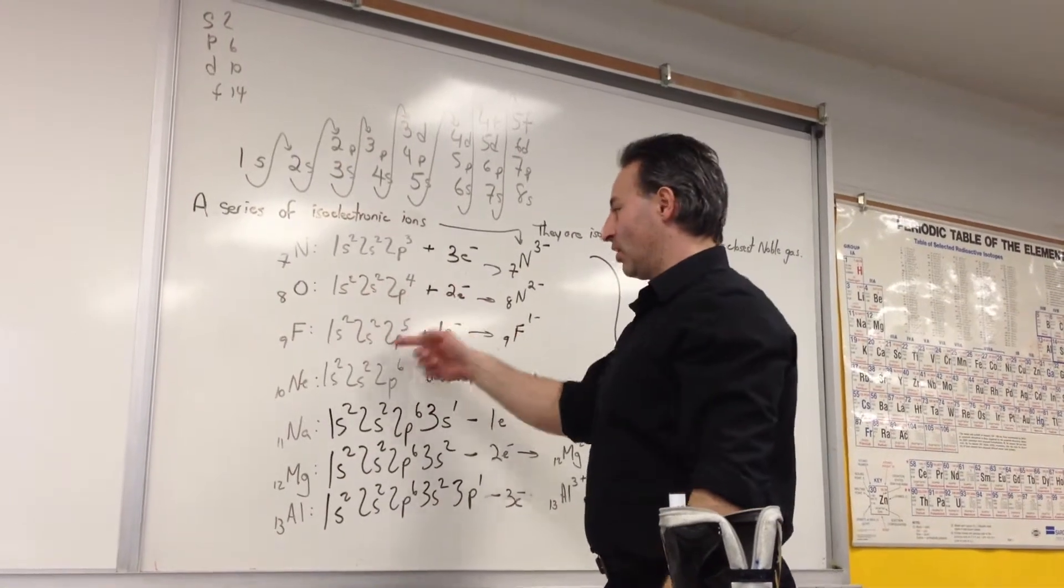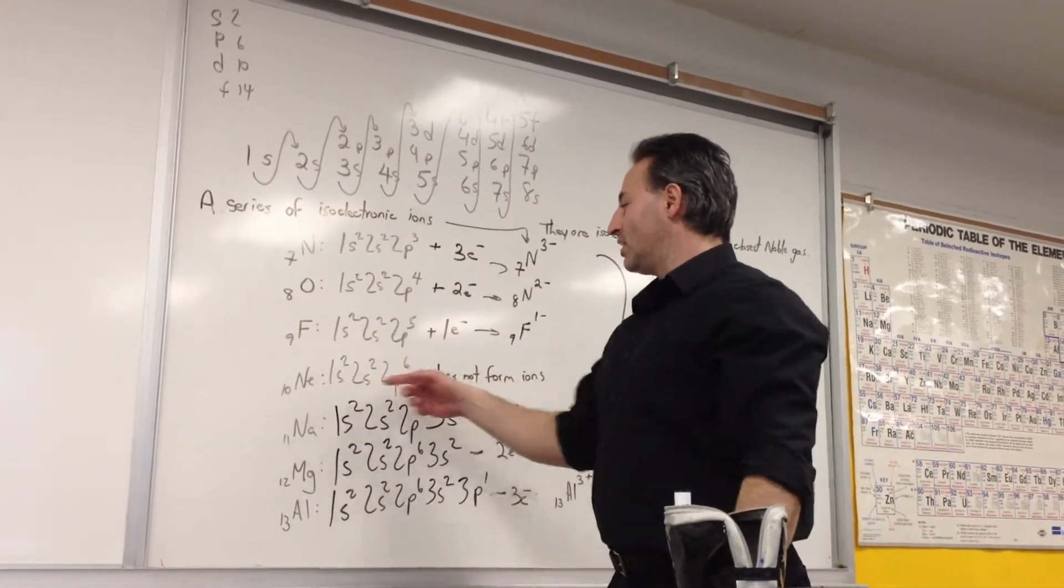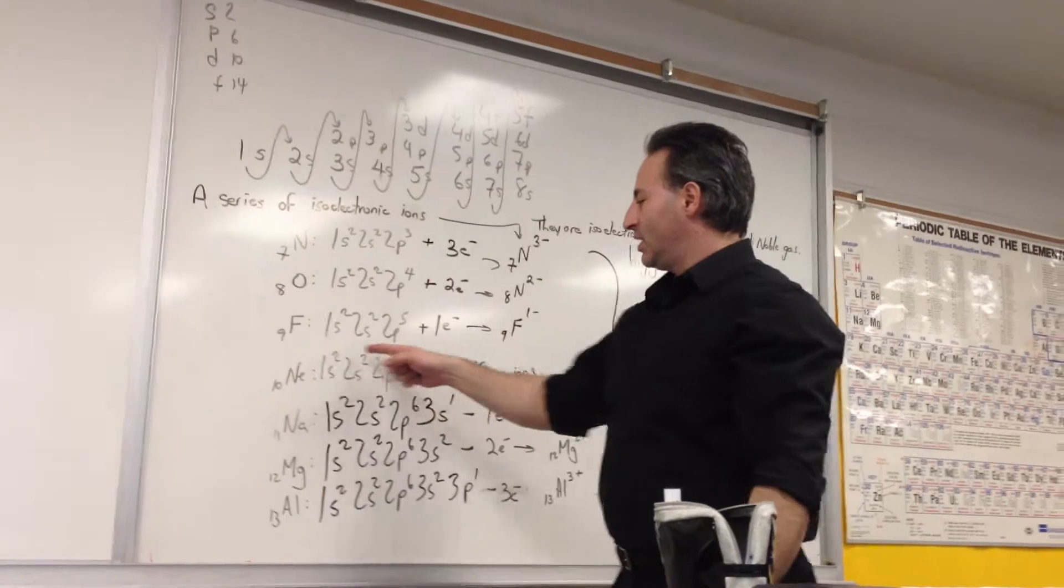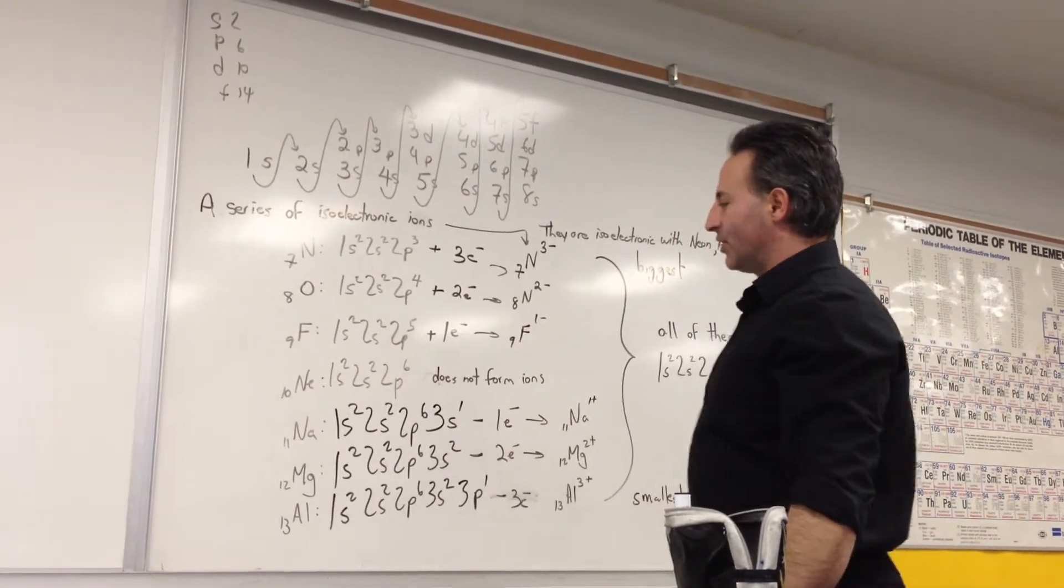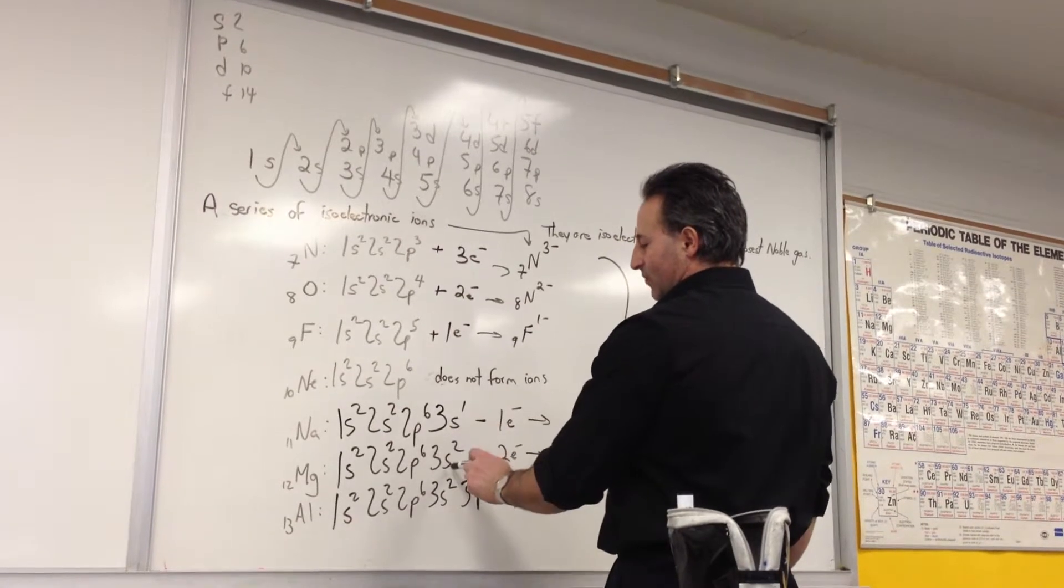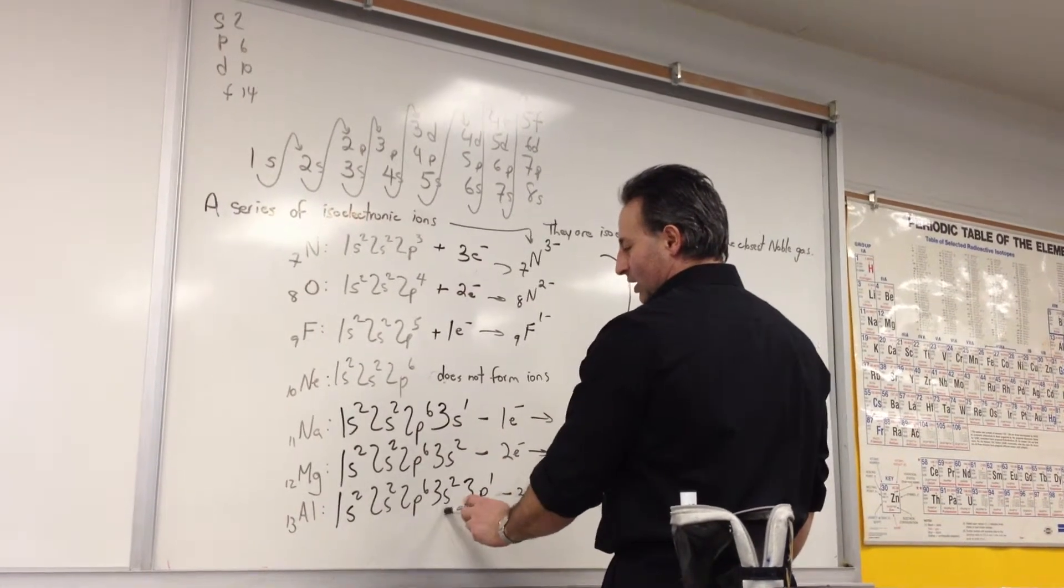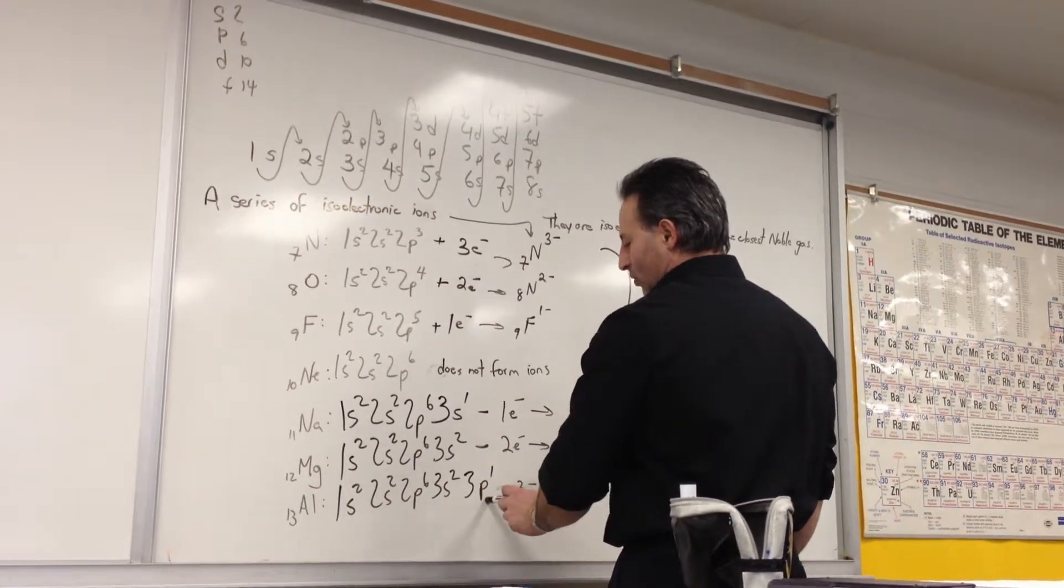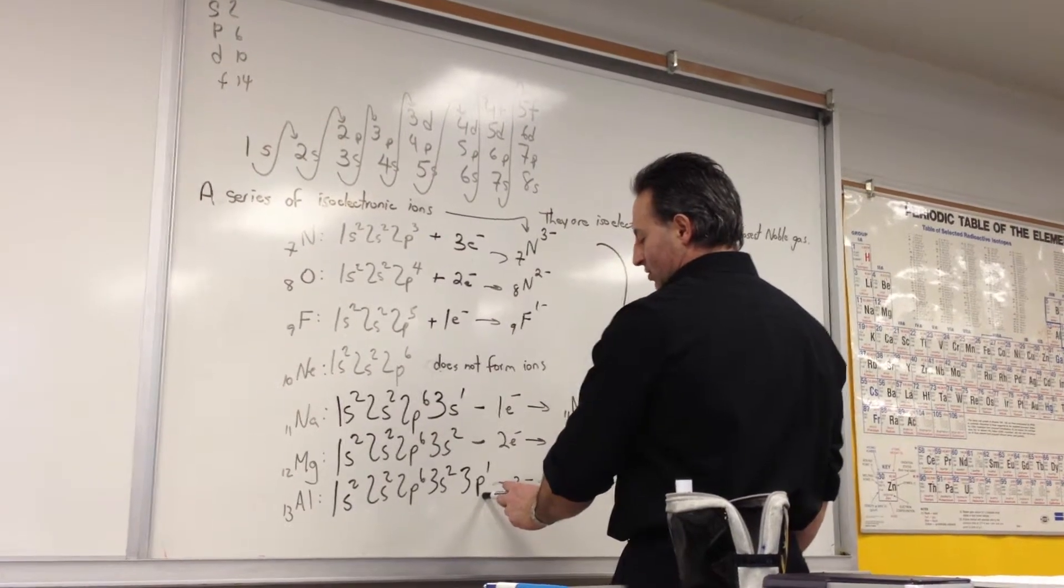Oxygen has 2p⁴. Fluorine is 2p⁵. Neon is 2p⁶, which is a particularly stable configuration. Sodium continues the pattern with 3s¹. Then magnesium is 3s². And aluminum opens up a new shell, 3p¹.